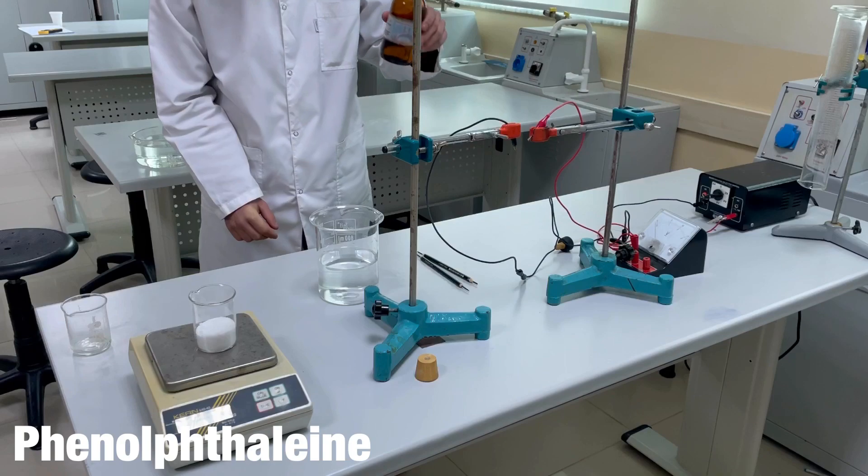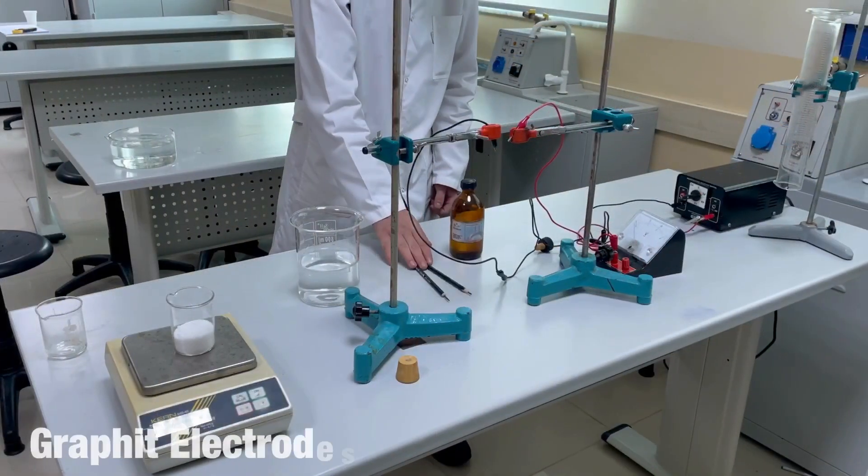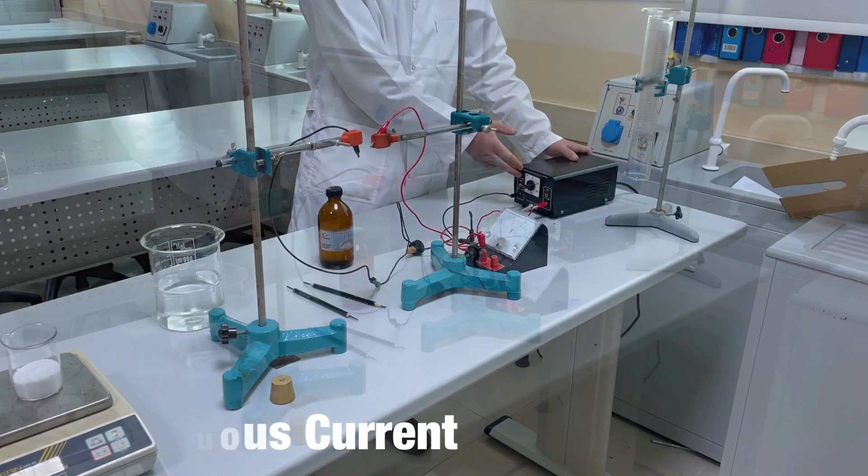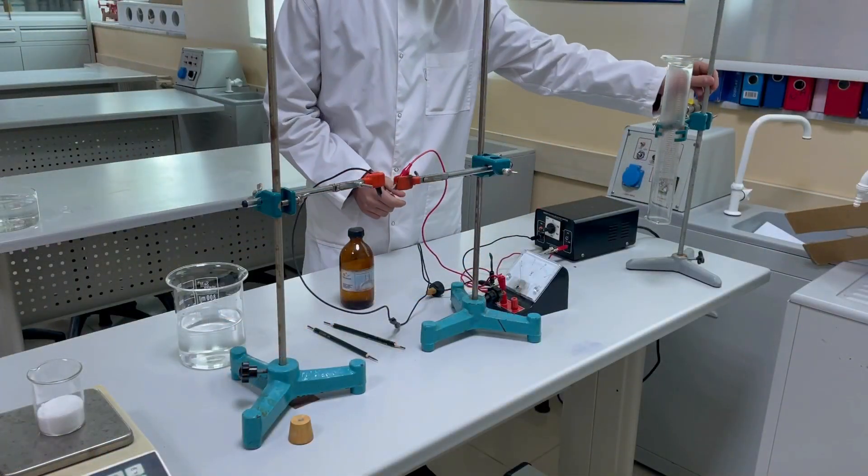We need the phenolphthalein indicator. We need 2 graphite electrodes. Also we need a continuous electricity supply. We will need a glass tube to collect hydrogen.